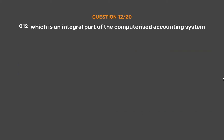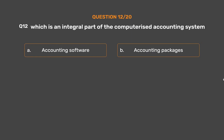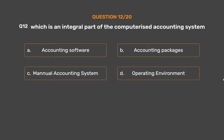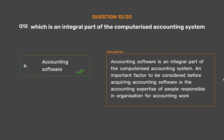Question number 12. Which is an integral part of the computerized accounting system? Option A: Accounting software. Option B: Accounting packages. Option C: Manual accounting system. Option D: Operating environment. The correct answer is Option A: Accounting software. Accounting software is an integral part of the computerized accounting system. An important factor to be considered before acquiring accounting software is the accounting expertise of people responsible in the organization for accounting work.